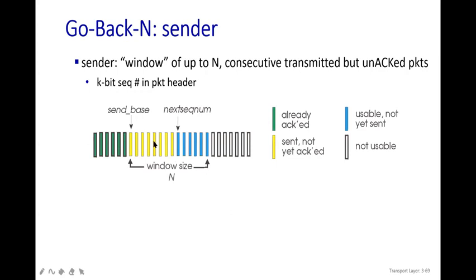The yellow color packets are waiting to be sent to the receiver side — not yet acknowledged, waiting in the pipeline. The blue color packets have not been sent yet, and the black-and-white packets have not been utilized at all. The packets from green to yellow are in the current send sequence. The next sequence number starts from blue. There is a window size, which we call N.